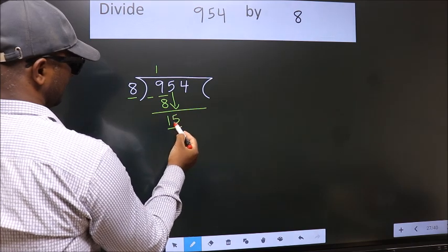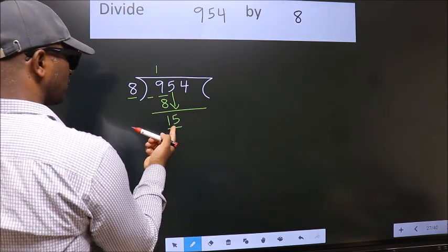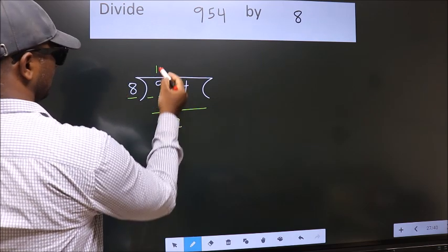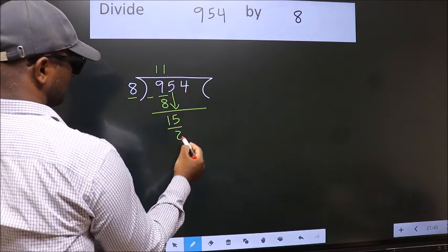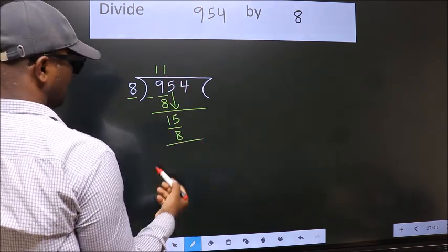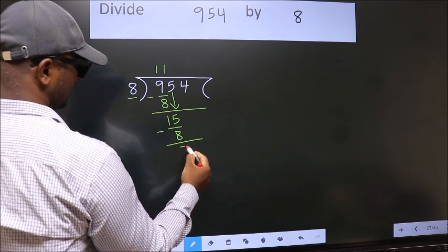So 15. A number close to 15 in 8 table is 8 once 8. Now we subtract, we get 7.